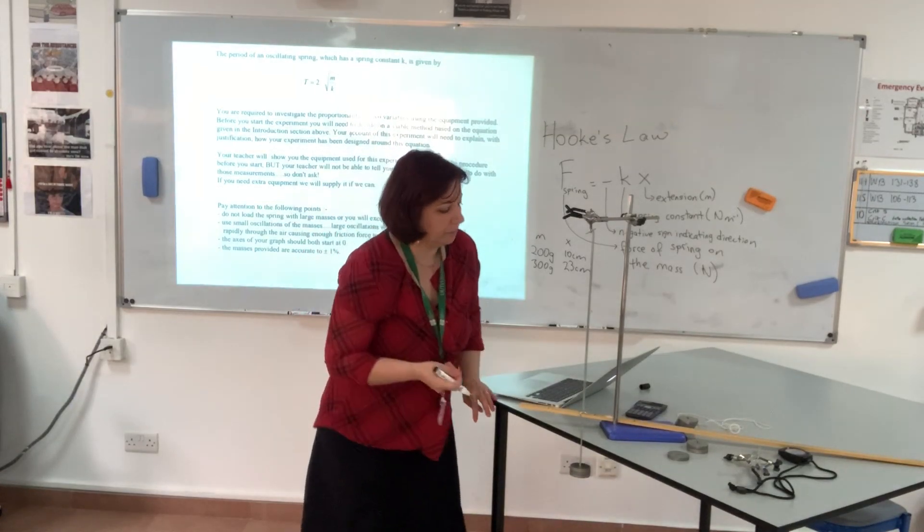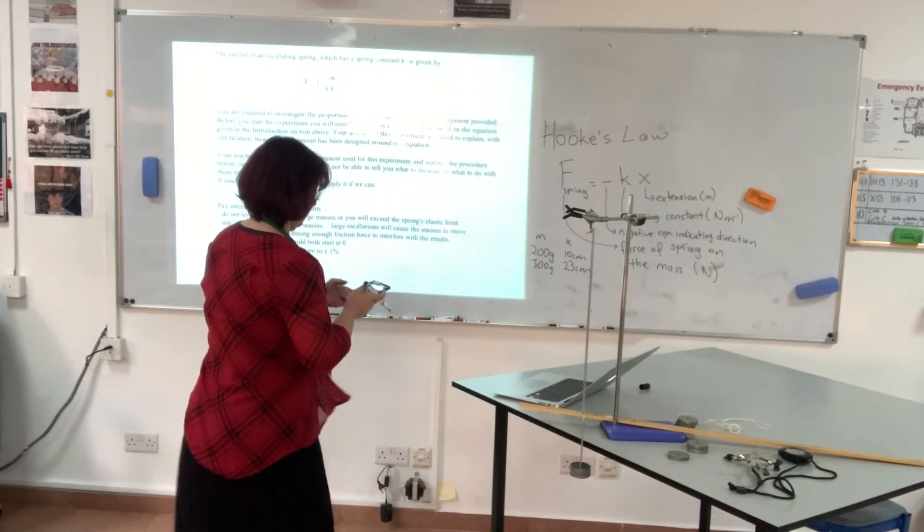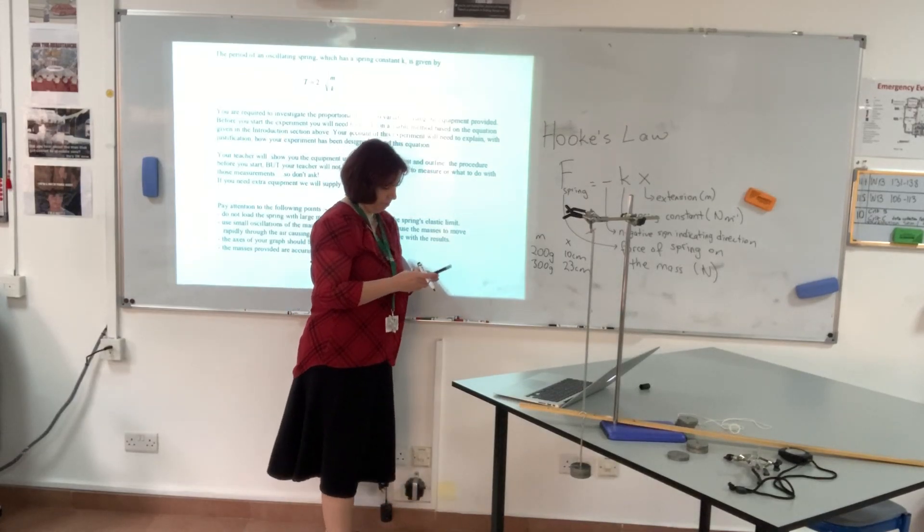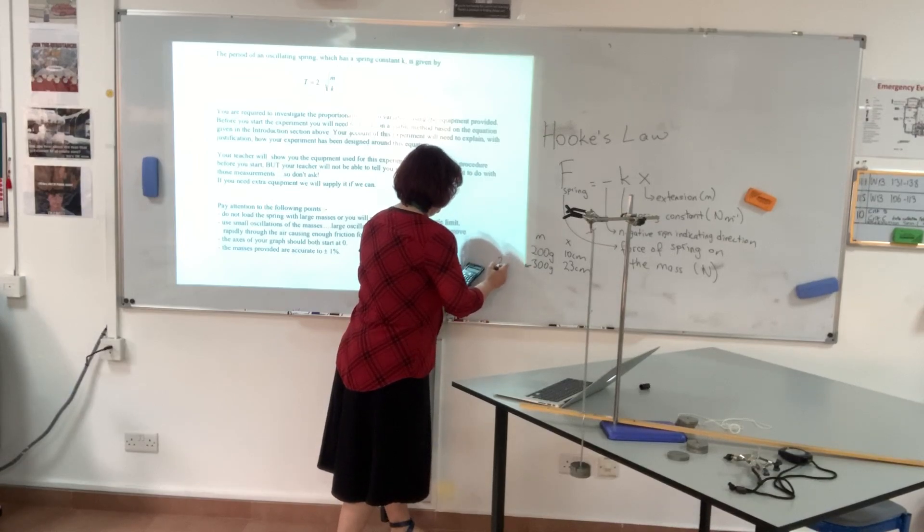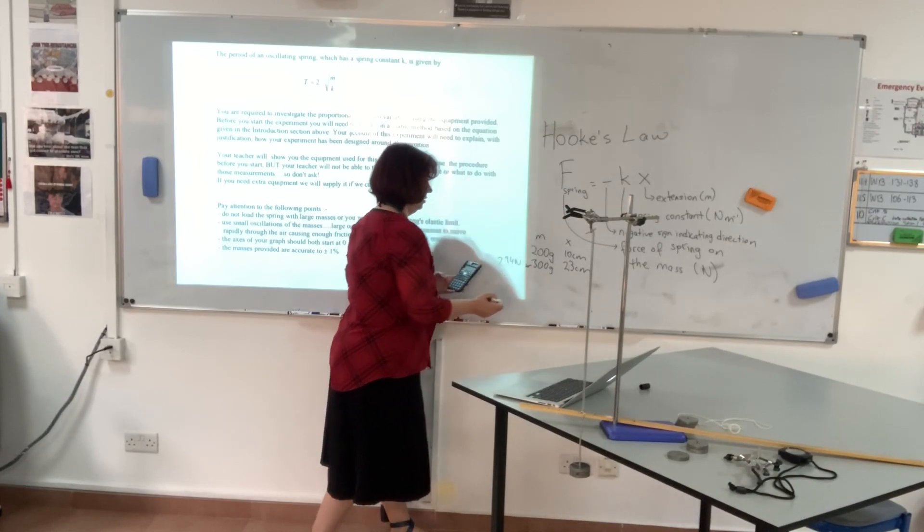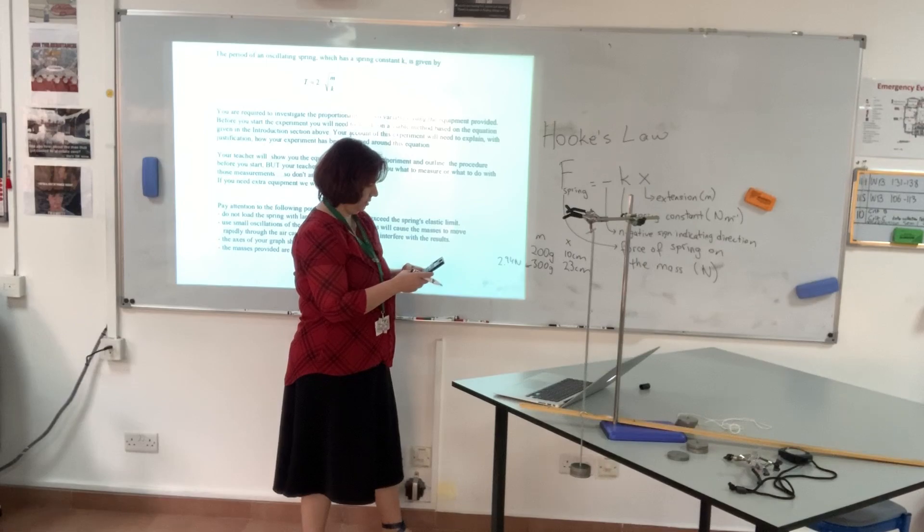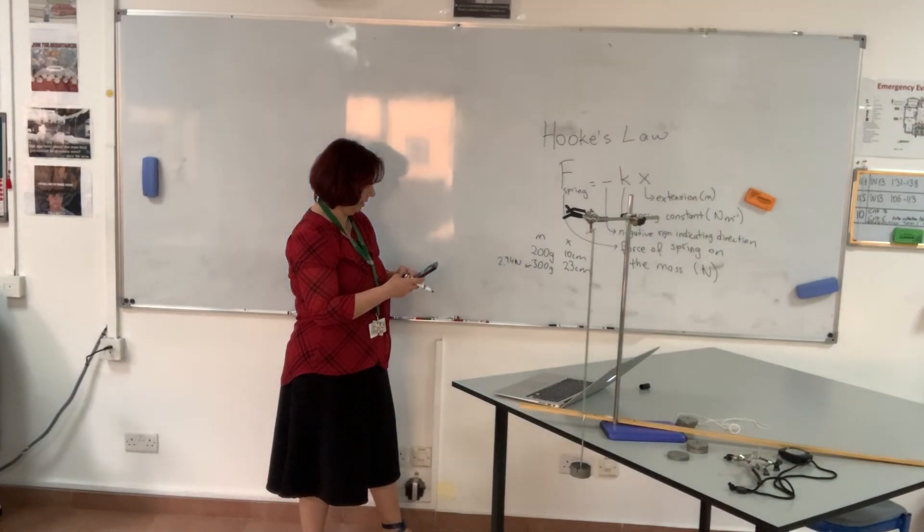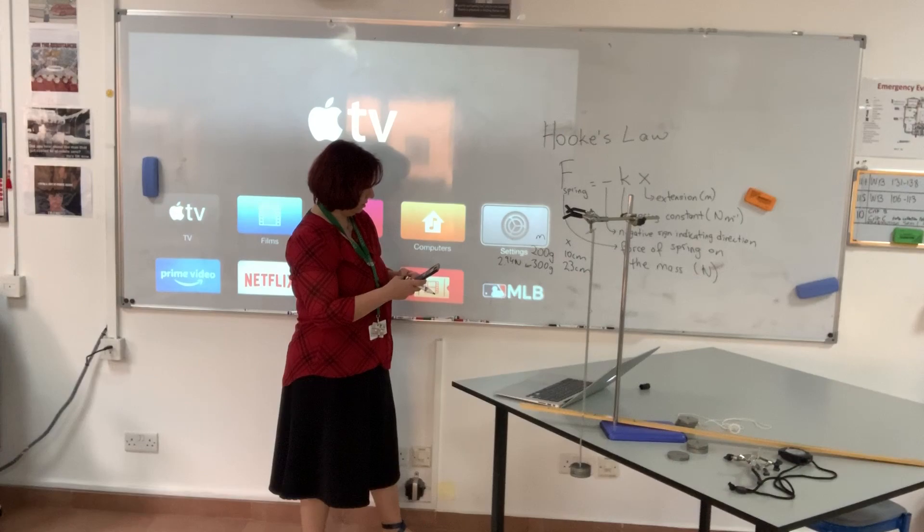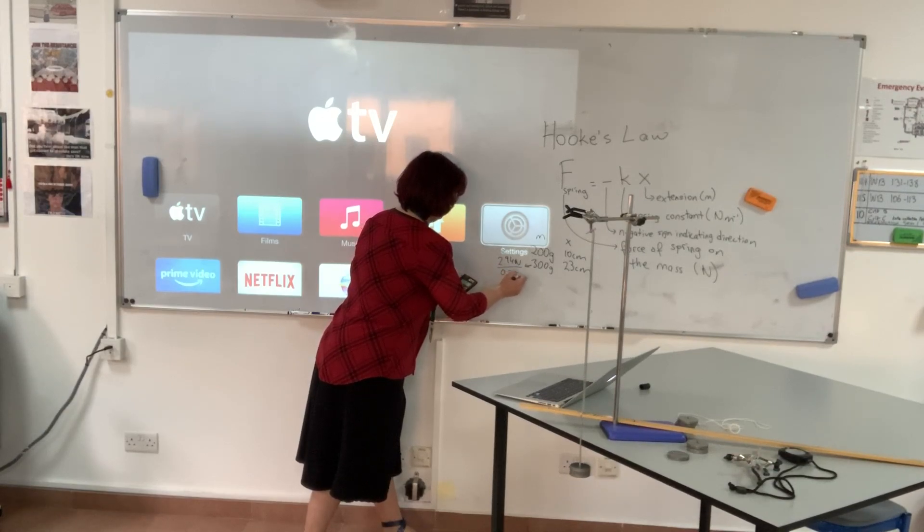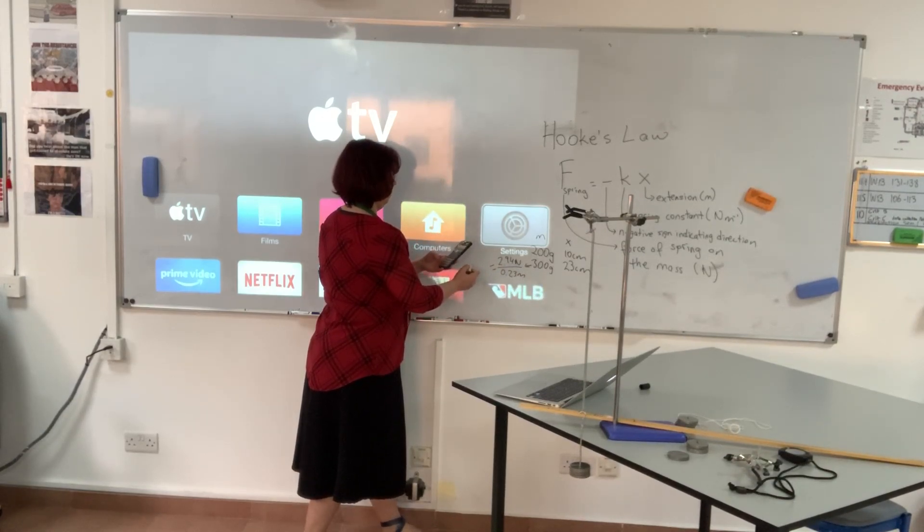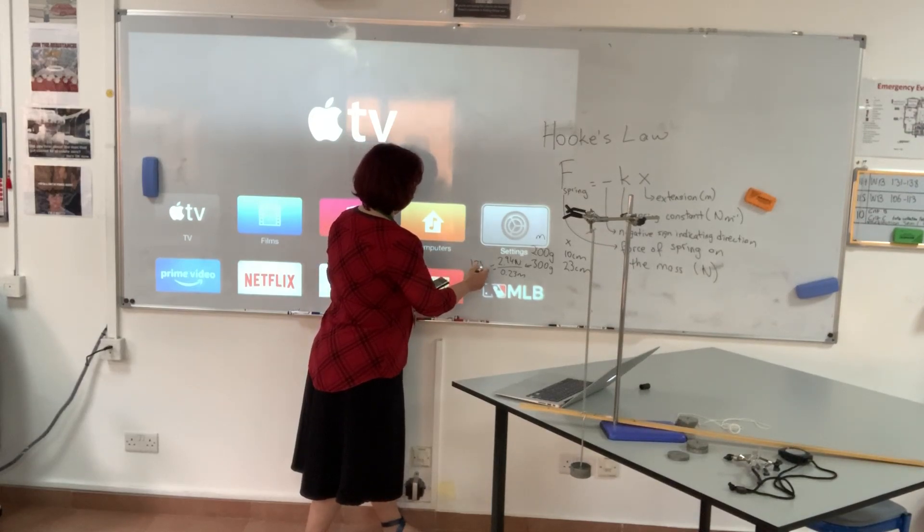Let's see what that would be. So 0.3 kilograms times 9.8, this is 2.94 newtons. 2.94 newtons divided by 0.23 meters, this gives a spring constant of 12.8 newton per meter.